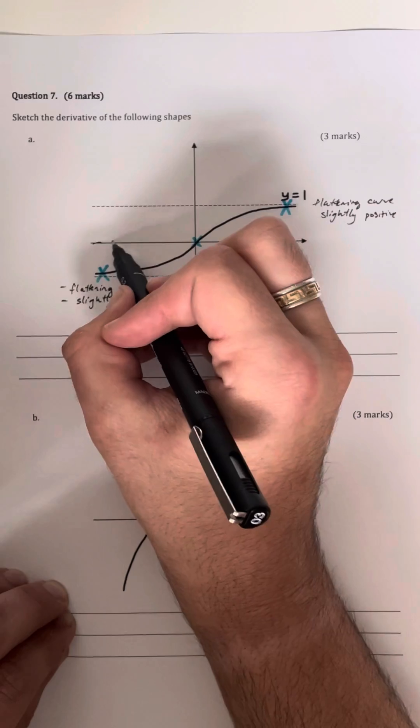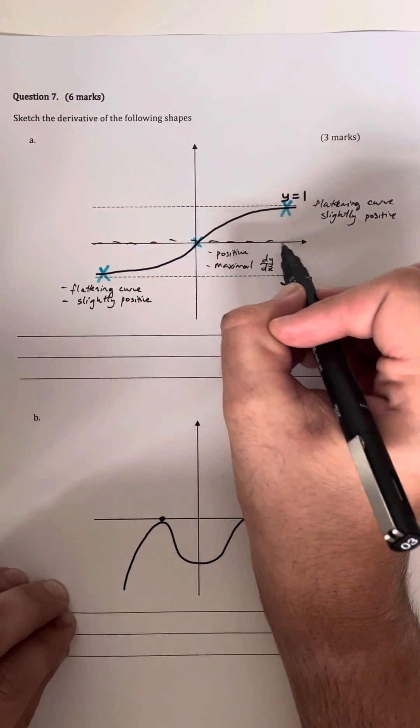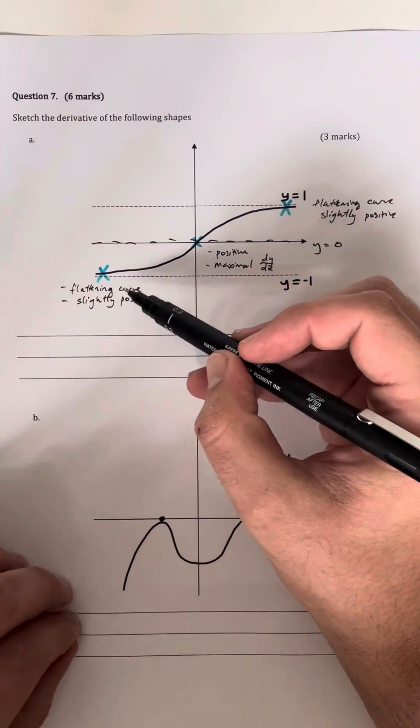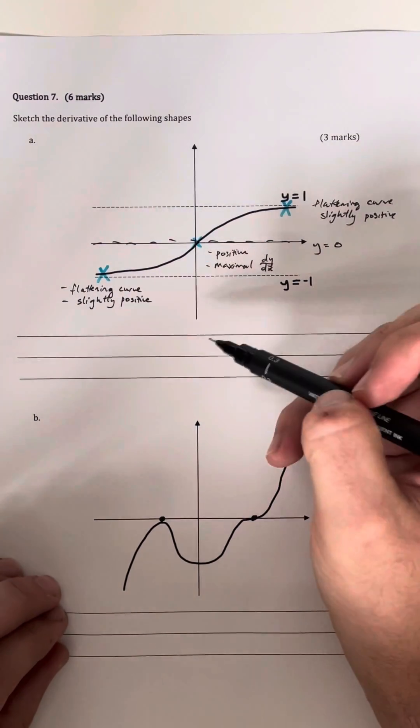What we need to assume is that we have an asymptote at y is equal to 0 on our dy/dx function, and this is because our gradient actually never reaches 0, so it makes sense that we have an asymptote here.